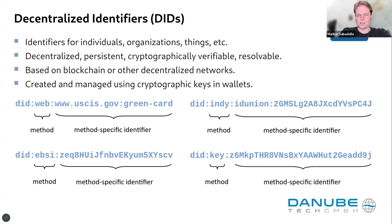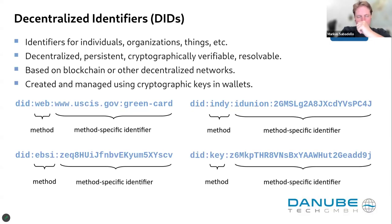DIDs are a type of identifier designed to be decentralized. In contrast to other types of identifiers — like domain names, email addresses, or usernames — those are not decentralized; they are assigned by some central authority. You have to go somewhere, register a username, register a domain name and pay for it. DIDs are designed to be different — you can create an identifier using cryptography, using keys, using decentralized infrastructures like blockchains or other decentralized networks, without dependency on a central authority.